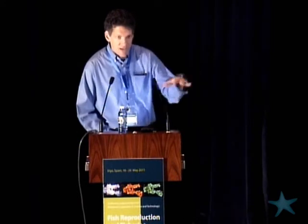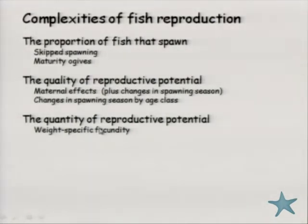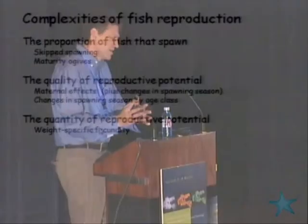Here's my perhaps simple and naive categorization of some of the concepts we heard about this week. The first category is the proportion of fish that spawn — our assessments typically have a maturity ogive, but usually don't account for things like skip spawning. A second category is the quality of the SRP or reproductive potential — we heard about maternal effects, and as Richard Nash pointed out, it's not just the egg or larva itself but also the time and space of spawning and whether there's an age or length component in terms of spawner size. A third piece is the quantity of output — particularly weight-specific quantity, whether fish of different sizes and ages produce more on a per-unit basis than fish of other sizes and ages.